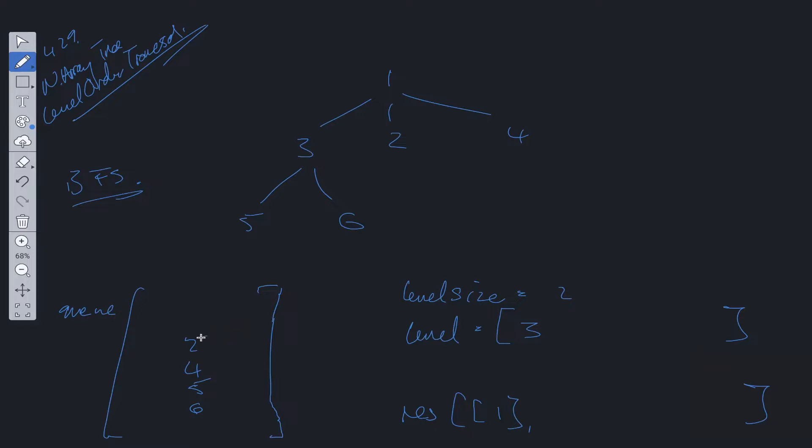Now we repeat the process. We shift off of queue, the value of 2. 2 is no longer in the queue. We check its children, it doesn't have any. So we just add 2 to level and decrement level size to 1. Then we shift off of queue, we look at 4. 4 has no children. So we add 4 to level. We decrement level size. Level size is now equal to zero, so we can push level into res: [3, 2, 4], and then reset level.